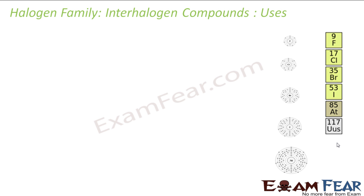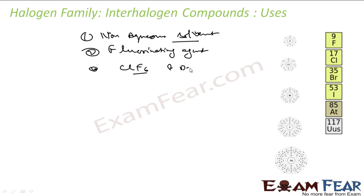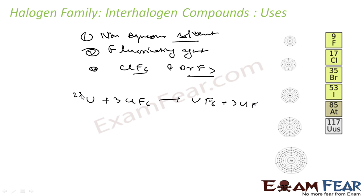The uses of interhalogen compounds: they are used as non-aqueous solvents where aqueous solvents are not needed. They are also used as fluorinating agents. ClF3 and BrF3 are used for the production of UF6 in the enrichment of uranium. The reaction: U + ClF3 gives UF6 and 3Cl2. This is uranium-235, so interhalogen compounds are used for the enrichment of nuclear fuel.